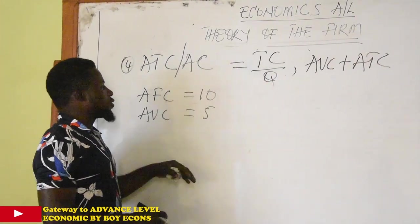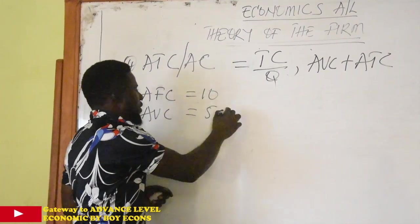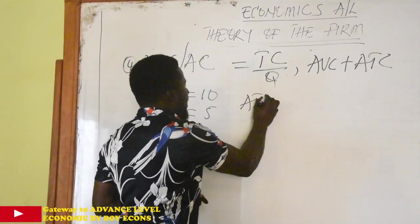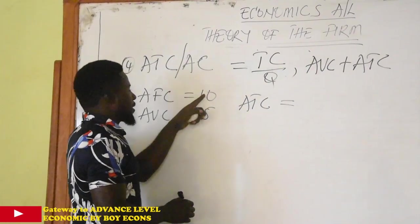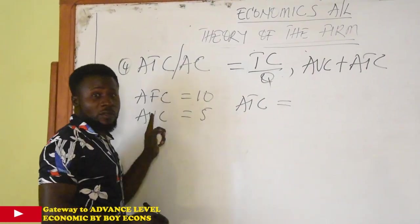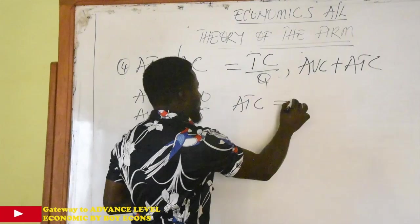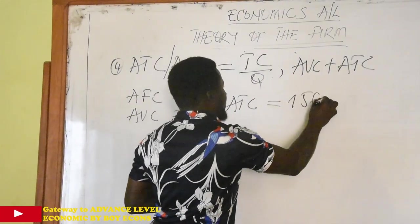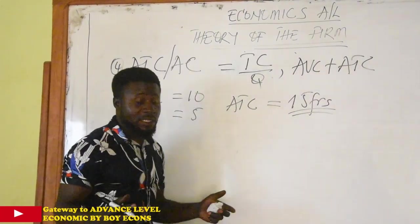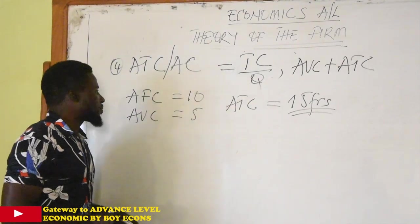So if that were to be the case, let's suppose this is a question, you would have said that your average total cost is equal to 10 plus 5. That is average fixed cost plus average variable cost, which will give you 15 francs.